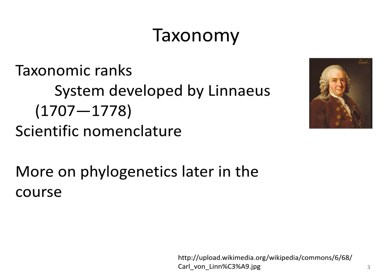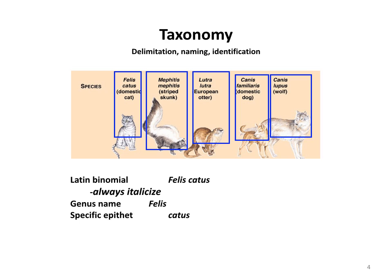We'll talk more about how to do phylogenetics later in the course. Here are some species shown with their common names in parentheses. Their scientific nomenclature — a Latin binomial — is shown in italics, which is the correct way to write scientific names. Always italicize them when writing. There are two parts: the first is the genus, the second is the specific epithet. For the domestic cat, Felis catus, the genus is Felis and the specific epithet is catus. The genus name is capitalized; the specific epithet is not. Both are italicized.